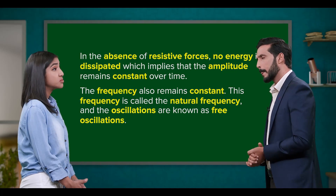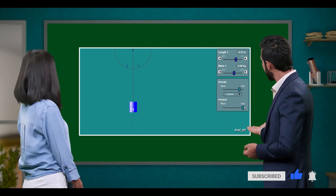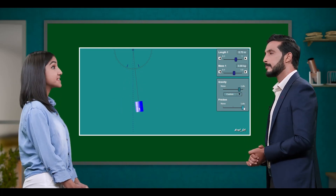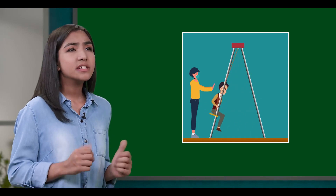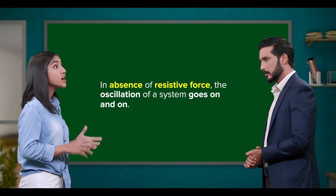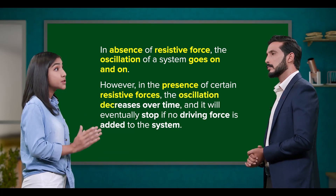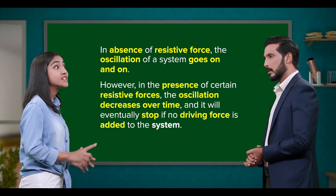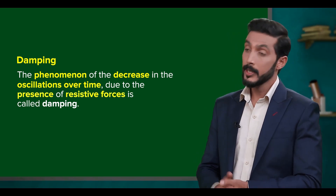But teacher, I seriously doubt that would be the case in real life. Indeed. So let's set the friction value to be greater than zero. This one is more realistic. Take an example of a boy playing on a swing — if we were to give him an initial push and then leave him alone, the oscillation would die out gradually and he would eventually come to a stop. So, can you infer what's happening here? In the absence of resistive force, the oscillation of a system goes on and on. However, in the presence of certain resistive forces, the oscillation decreases over time and will eventually stop if no driving force is added to the system. That's right. And this phenomenon of the decrease in oscillations over time due to the presence of resistive forces is what we call damping.